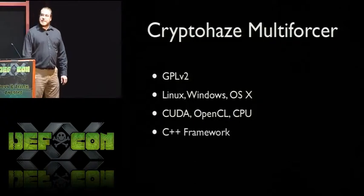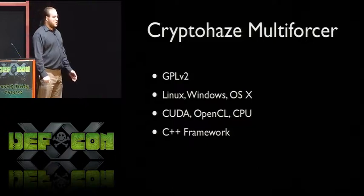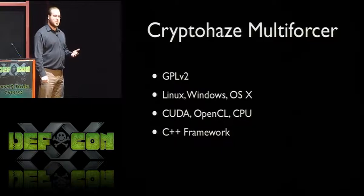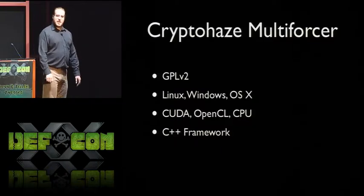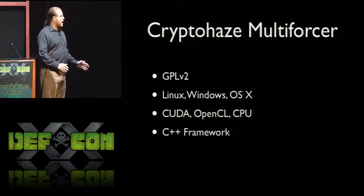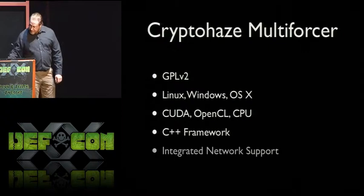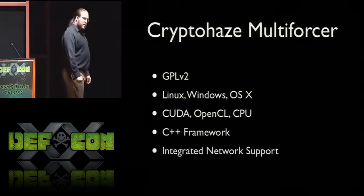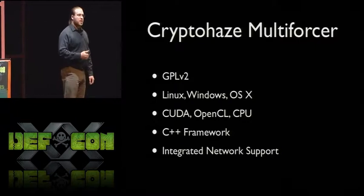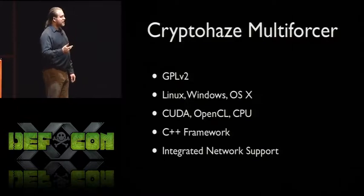It is written as a C++ framework with the goal being easy extendability. To add a new hash type of an existing implemented variety — say just a plain unsalted hash — once you've written your device kernel, there's very little glue code that you have to write on the host side to add it to the framework and begin cracking. And it has integrated network support. Unlike a lot of the other tools where there are third-party wrappers, my network support is built in, it's fully integrated with the tools, and it lets you use a whole lot of systems at once.